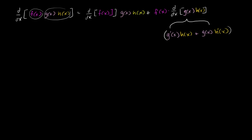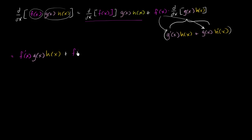So let's rewrite all of this. This is going to be equal to f prime of x times g of x times h of x, plus — distributing f of x — f of x times g prime of x times h of x, and then finally f of x times g of x times h prime of x.